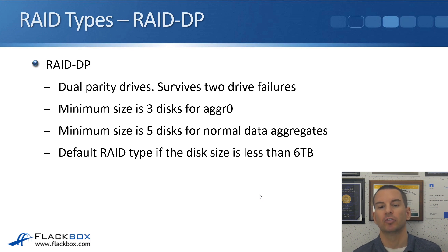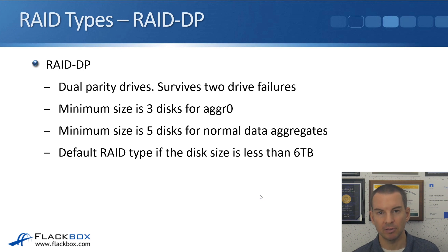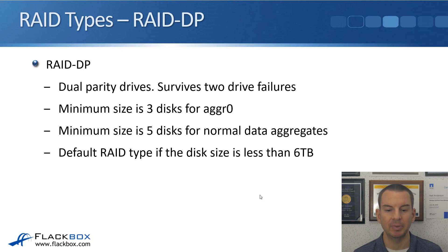The next type is RAID DP, which stands for dual parity. There are two parity drives, and because of that, it will survive two drive failures. With RAID DP, the minimum size is three disks for aggregate zero, and five disks for normal data aggregates. RAID DP is the default type if the disk size is less than six terabytes.